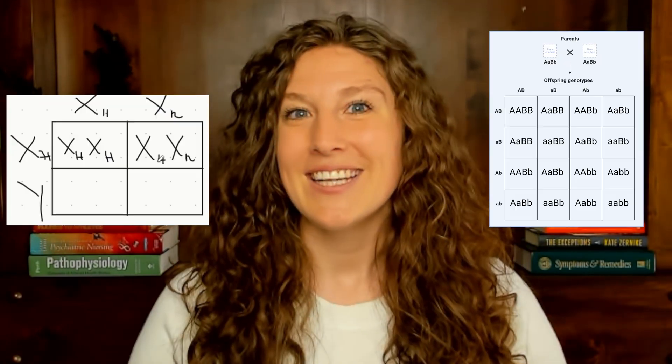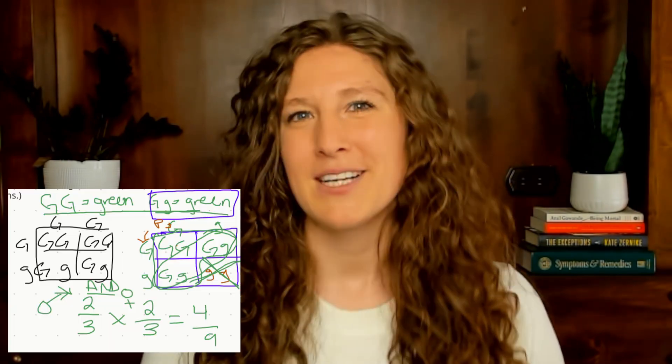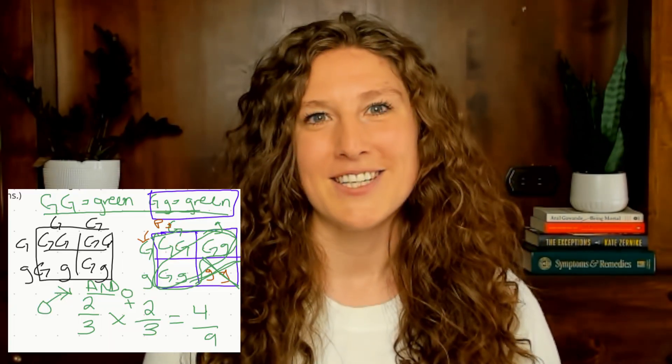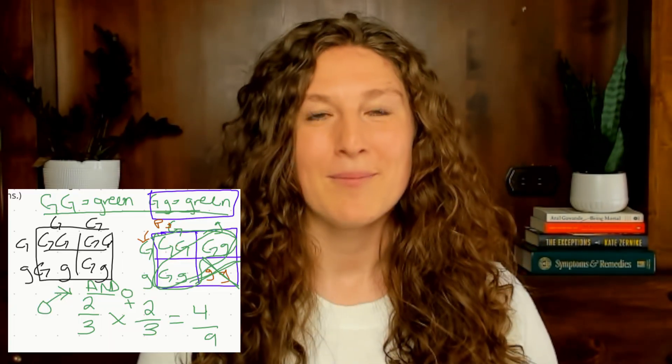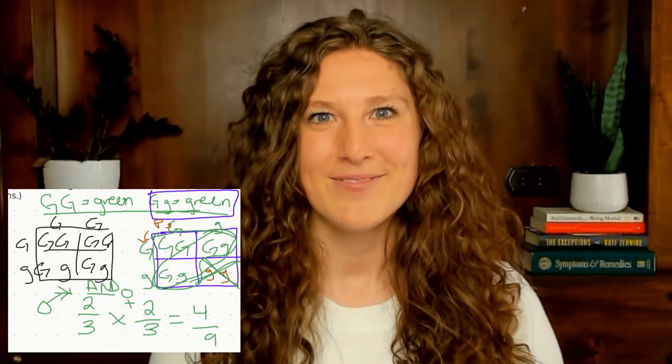Usually when we think of math on the MCAT, we think chemistry and physics. But in this video, we're going to talk about the math that you're going to see in the biology and biochemistry section of the MCAT. We'll focus on Punnett squares and Mendelian basics to answer even the most complex probability questions that will show up in genetics inheritance problems.